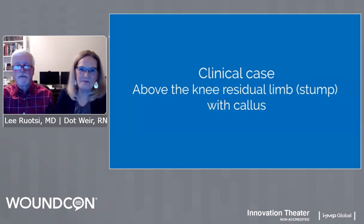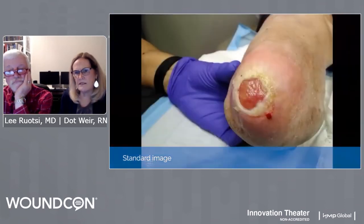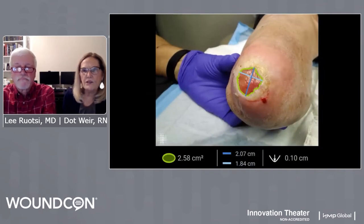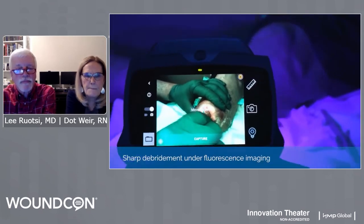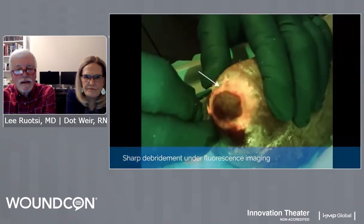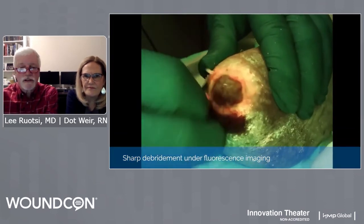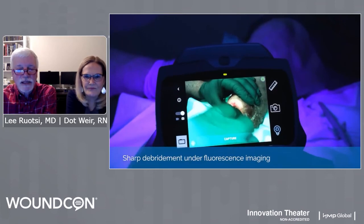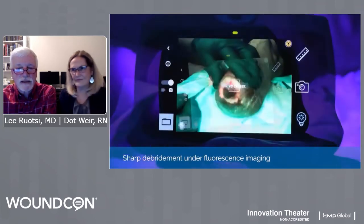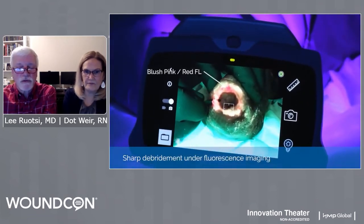Let's take a look at sharp debridement. I want to say something about this gentleman — it's a below-the-knee amputation. He has a wife with a significant illness, so he's on his feet about 16 hours a day. We have to be very careful about how large we make his wound, and you can see how the red fluorescence peels off.